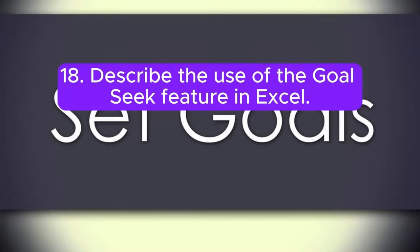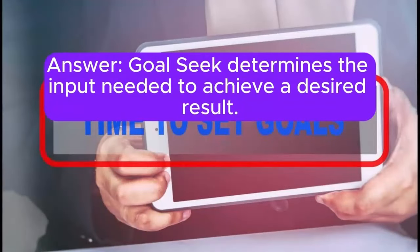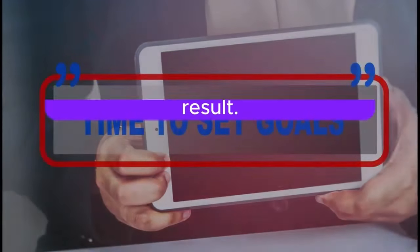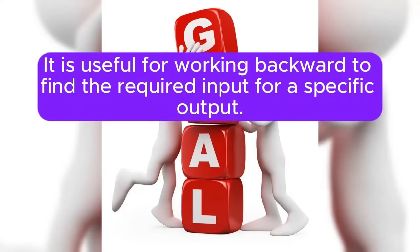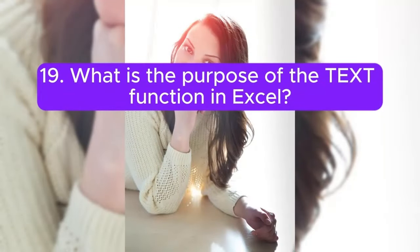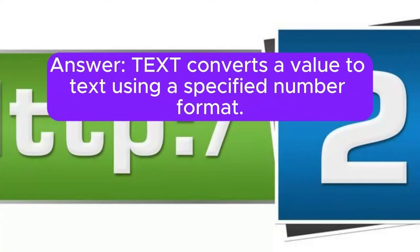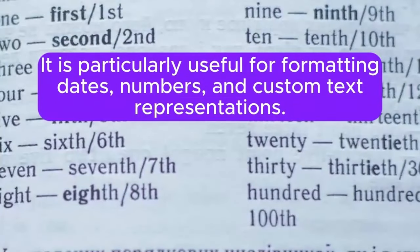Question 18: Describe the use of the Goal Seek feature in Excel. Goal Seek determines the input needed to achieve a desired result. It is useful for working backward to find the required input for a specific output. Question 19: What is the purpose of the TEXT function in Excel? TEXT converts a value to text using a specified number format. It is particularly useful for formatting dates, numbers, and custom text representations.